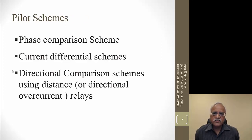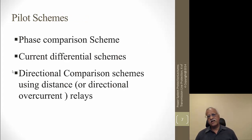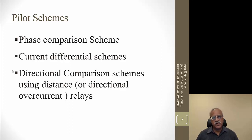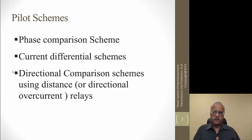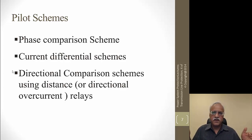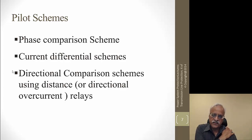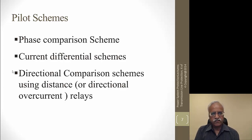Looking at other schemes: phase comparison schemes look at the current coming in and leaving at the remote terminal, check the phase relationship between those two, and exchange information on a communication medium. They can cover 100% of the line section because there is no local 15% or remote 15% uncertainty — it is a differential-type scheme. It can operate instantaneously without any time delay for any fault on the line. Similarly, current differential schemes also provide instantaneous clearing for any fault on the line.